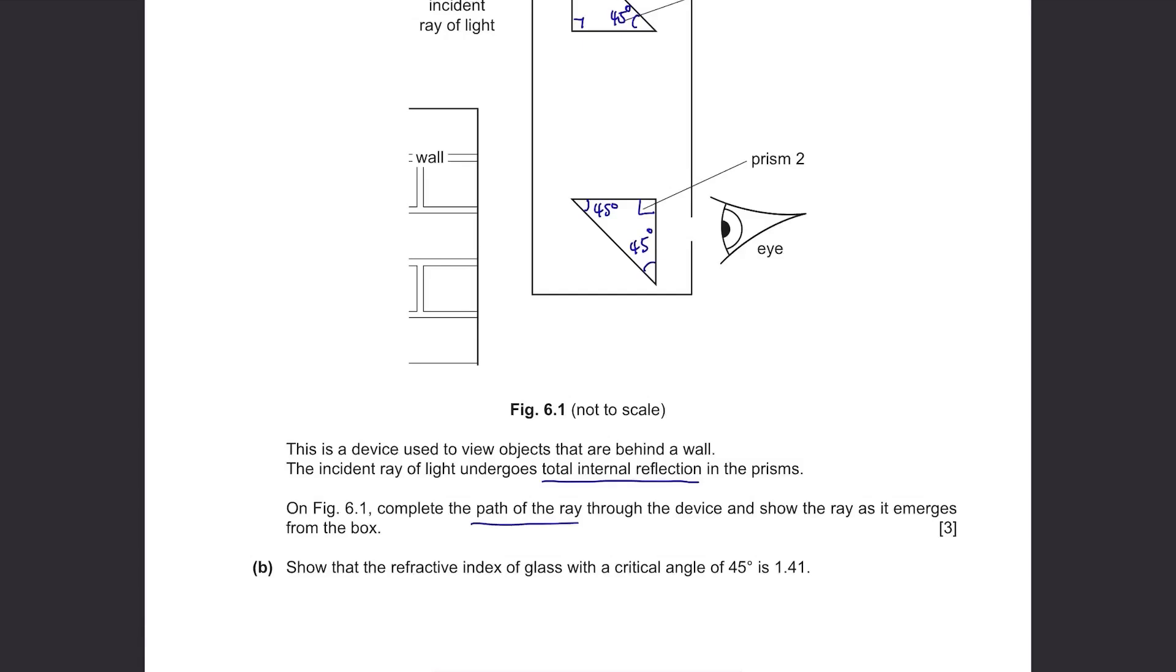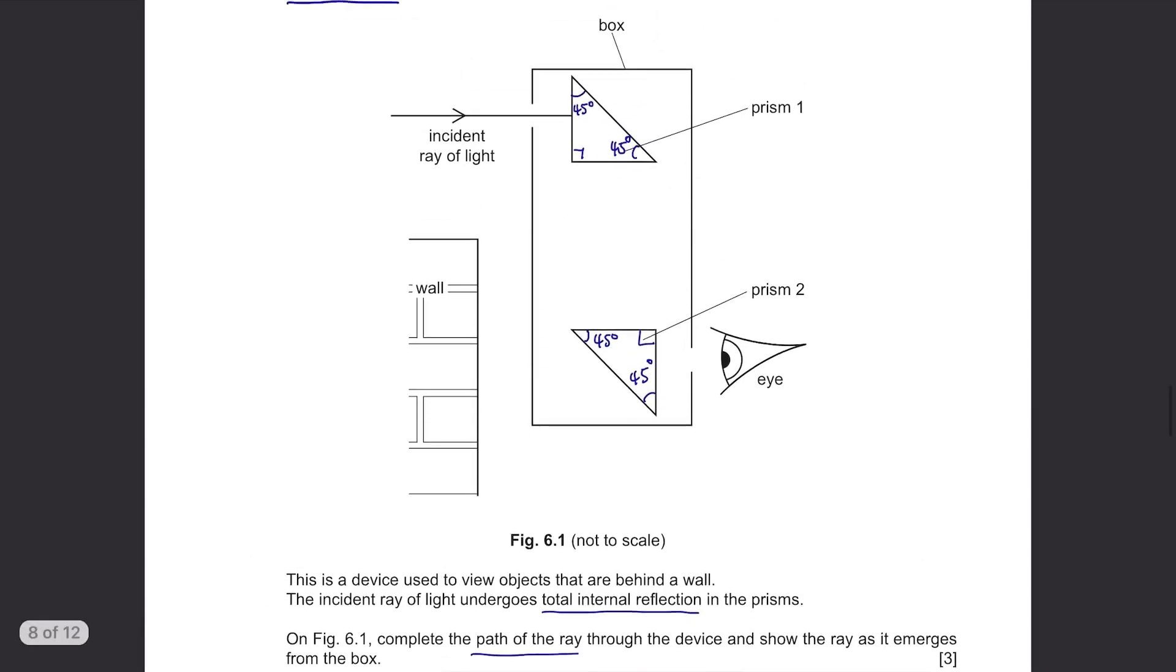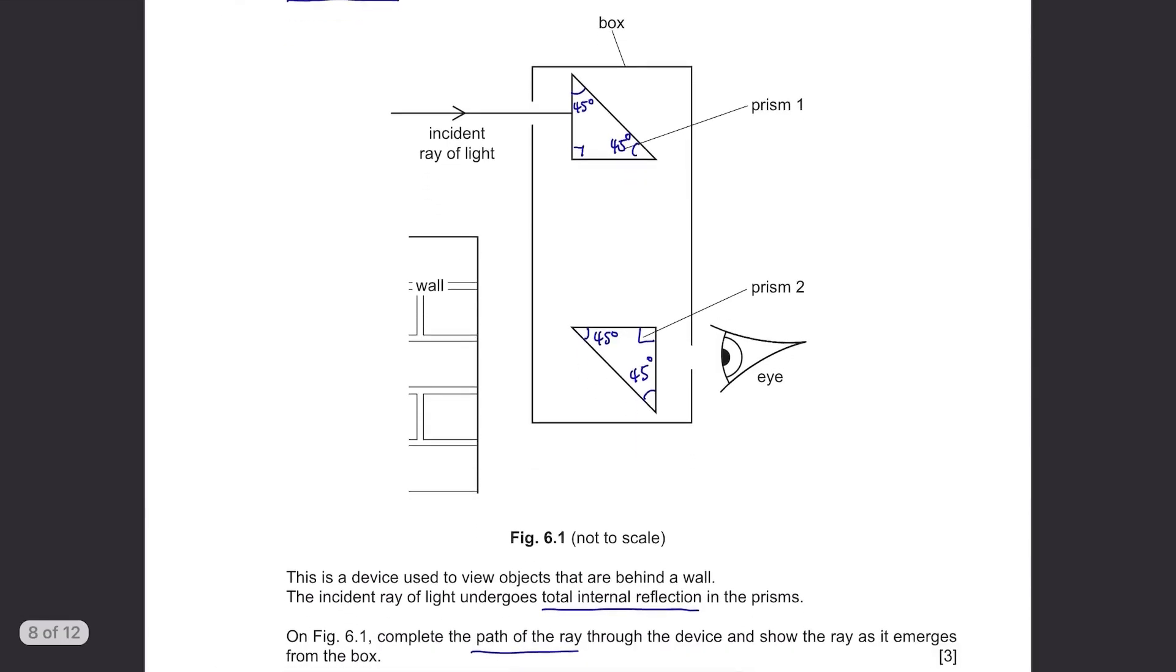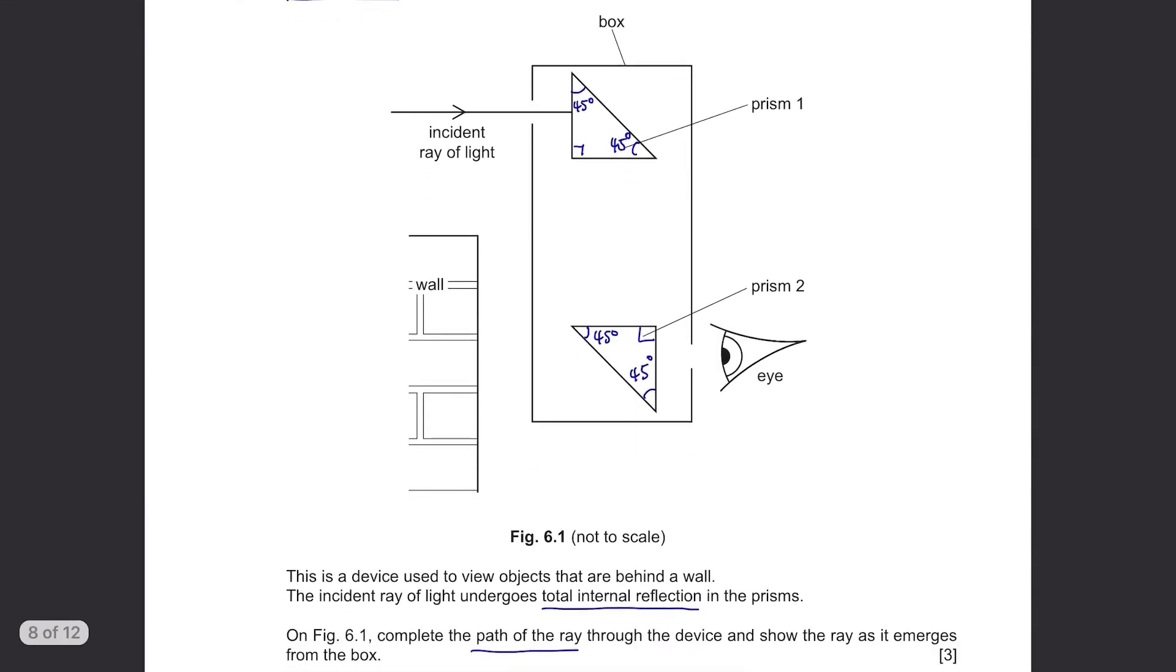On figure 6.1, complete the path of the ray through the device and show the ray as it emerges from the box. When you look at the prism here, you'll be able to see something behind this wall because light can travel from the prism above to down here. This is the complete path of the ray. Make sure your lines are straight and hit the prism at 90 degrees.